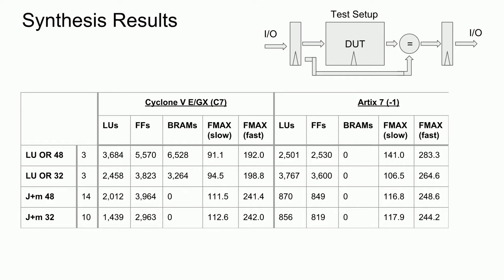Overall, the Cyclone 5 did worse than the Artix 7 in both resource usage and clock speeds. The BRAM JTLB implementations used significantly fewer logic units and for the most part resulted in higher clock speeds compared to the OR gate versions. Unfortunately, the BRAM implementation is too slow for the PlayStation 2. However, since those were default results, we should see if optimizations can improve the implementation.